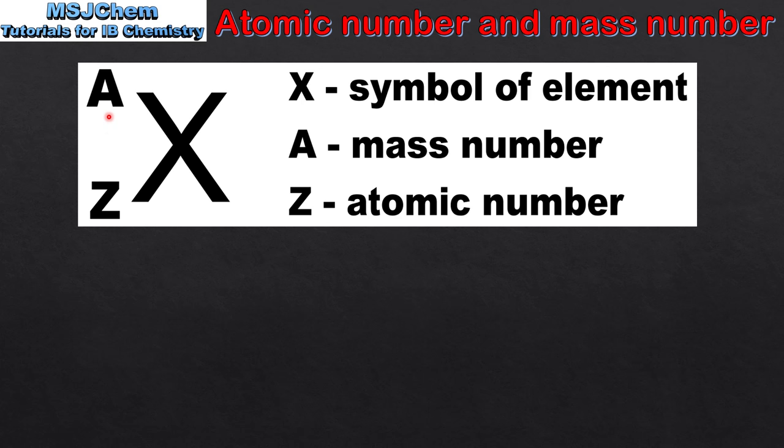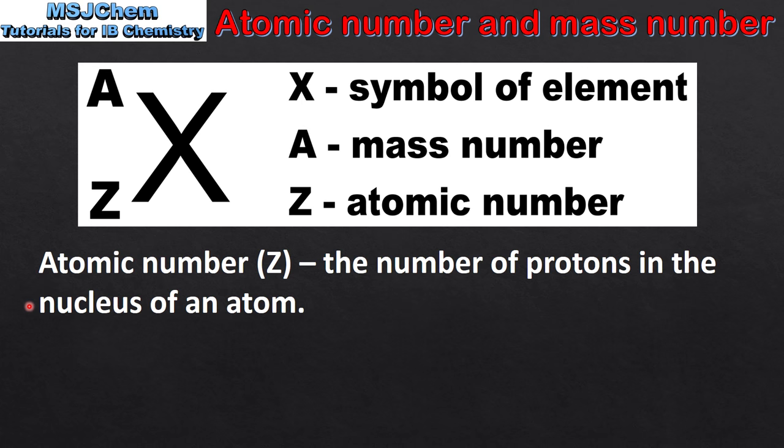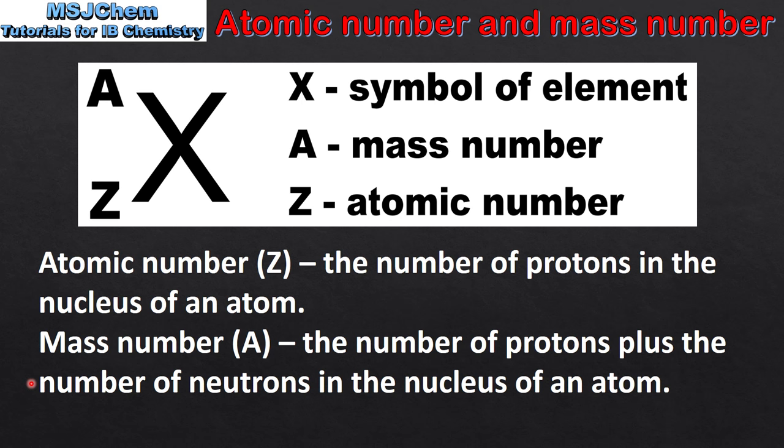The atomic number is the number of protons in the nucleus of an atom. The mass number is the number of protons plus the number of neutrons in the nucleus of an atom.